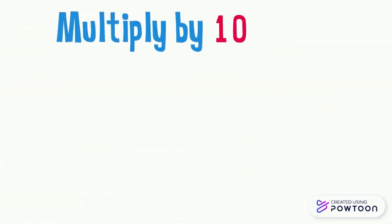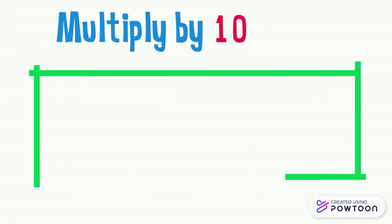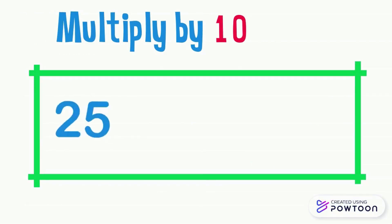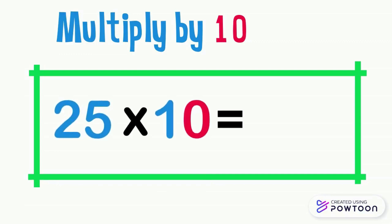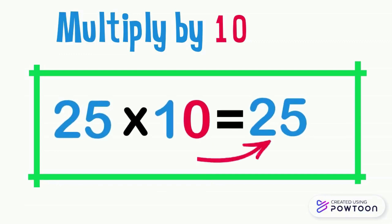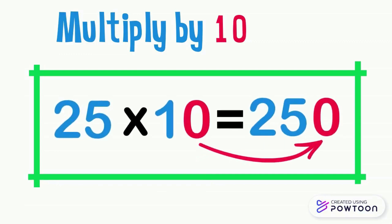To multiply a number by 10, we write the number, then we put the 0 to the right of this number. For example, to multiply 25 by 10, we write the number 25, then we put the 0 to the right of 25. So 25 times 10 equals 250.